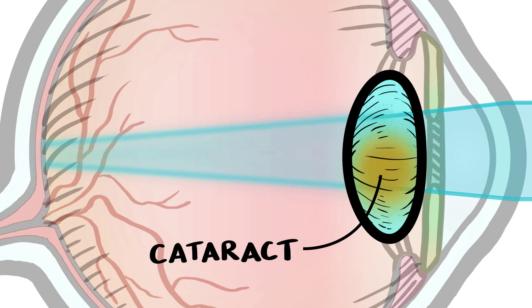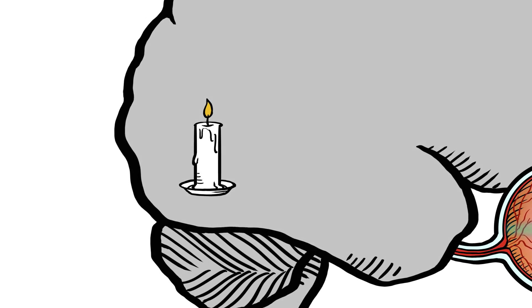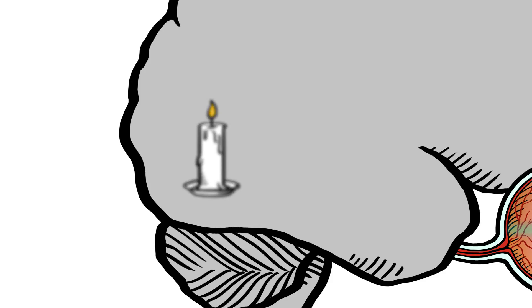Scattering light so that it no longer focuses clearly on the retina. As a result, vision quality fades, images are blurred, and lights may appear to have starbursts or halos around them.